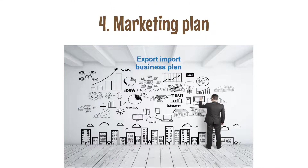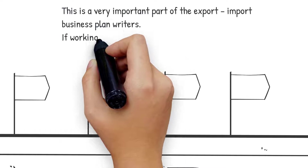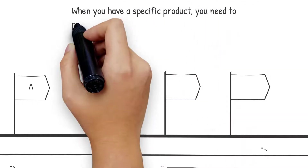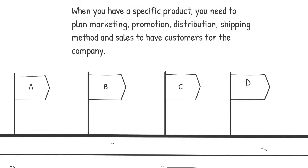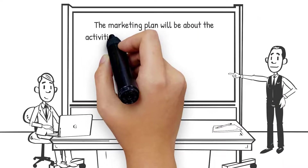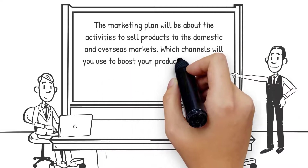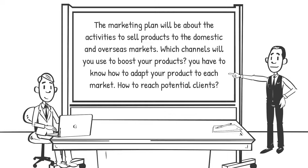4. Marketing Plan. This is a very important part of the Export-Import Business Plan. If working with a team, the marketing plan will help clarify the goals. When you have a specific product, you need to plan marketing, promotion, distribution, shipping method, and sales to have customers for the company. The marketing plan will cover activities to sell products to domestic and overseas markets — which channels you will use to boost your products, how to adapt your product to each market, and how to reach potential clients.